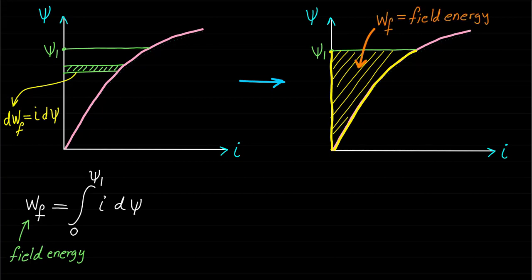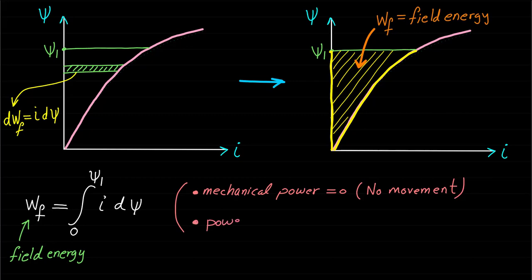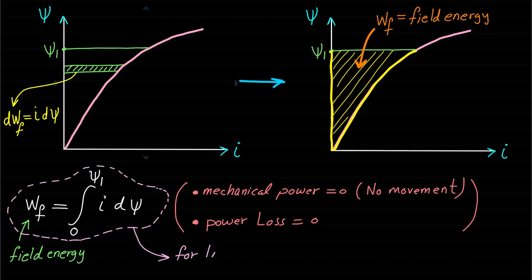Remember, the expression of the field energy has been identified under two assumptions: mechanical power is zero and the power loss is zero. Also, this expression is a general expression for both linear and non-linear magnetic field systems.